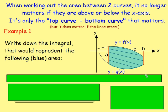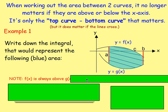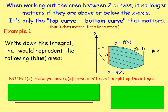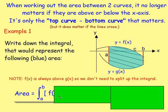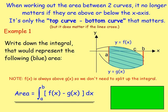Example 1: write down the integral that would represent the following area. Do the curves cross? No, they don't — f of x is always above g of x, so that's fine. To work out the area, the limits start at x equals a and finish at x equals b. Doing top curve minus bottom curve, on top we have f of x and on the bottom we have g of x. So it's the integral of f of x minus g of x, integrated with respect to x. Don't forget to put in dx.